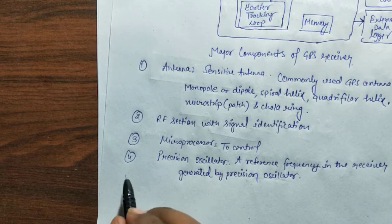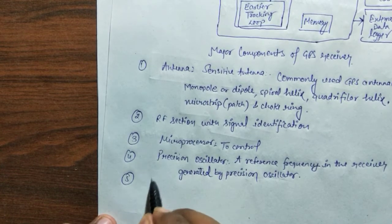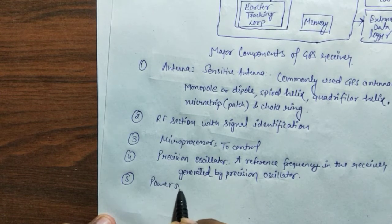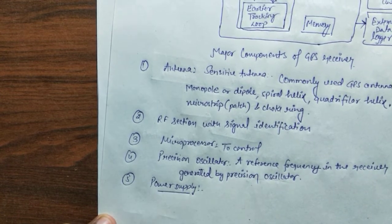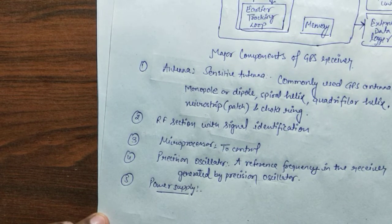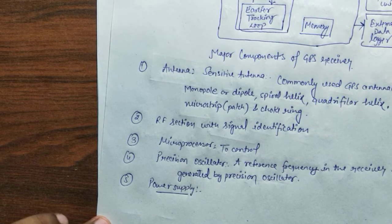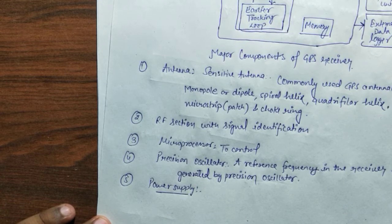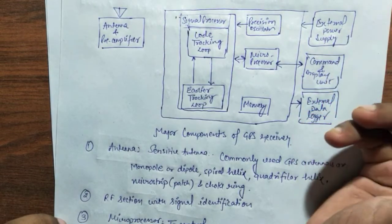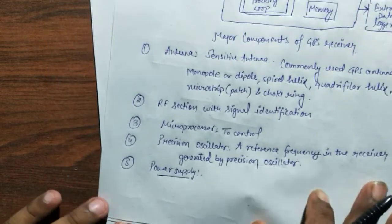The next component is the power supply. First-generation GPS receivers consumed very high power, but modern receivers are designed to consume as little energy as possible. Most receivers have an internal rechargeable nickel-cadmium battery in addition to an external power supply.